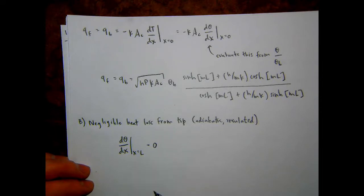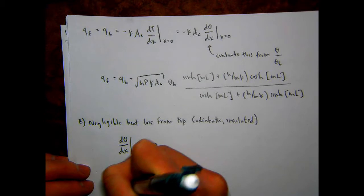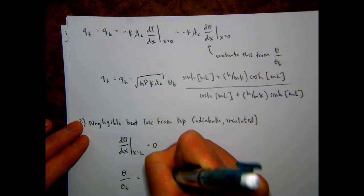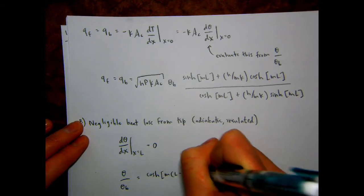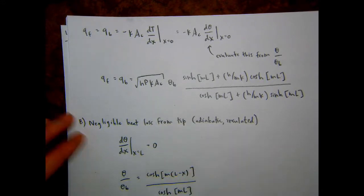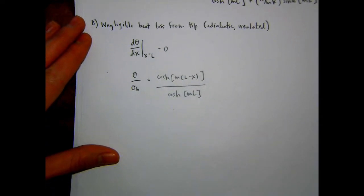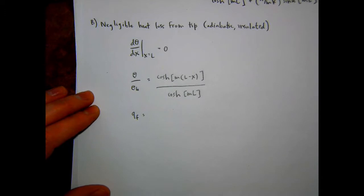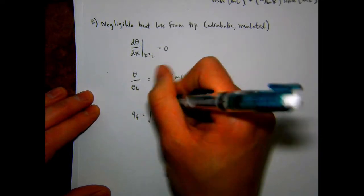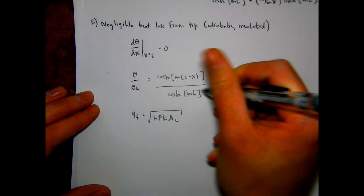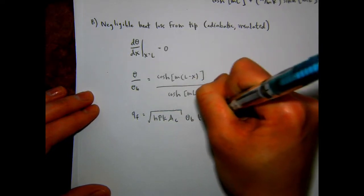For the adiabatic tip (Case B), the temperature distribution is θ/θ_B = cosh(m(L-x)) / cosh(mL). The heat transfer rate is Q_F = √(hPkA_C) · θ_B · tanh(mL).